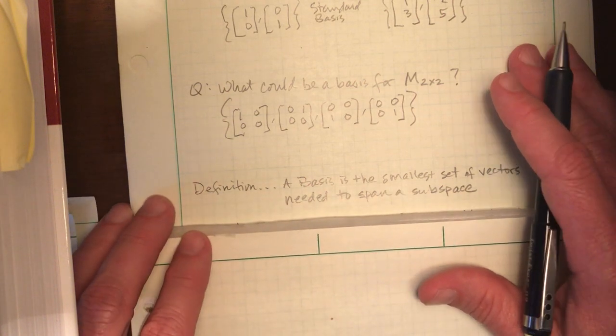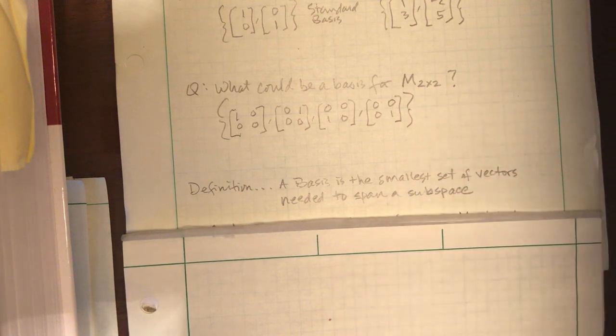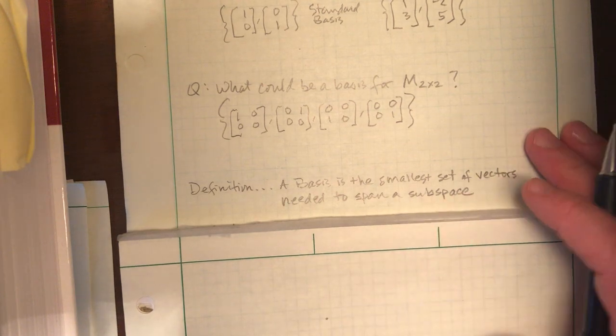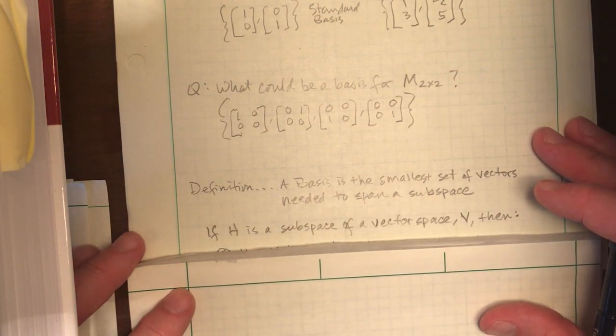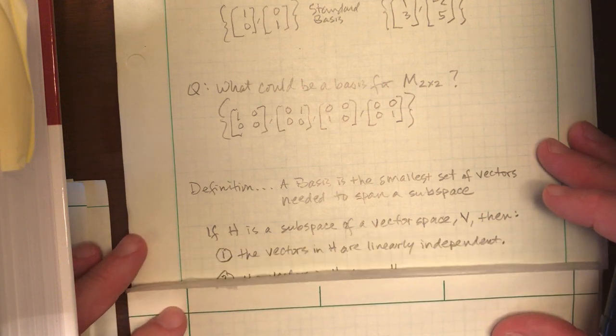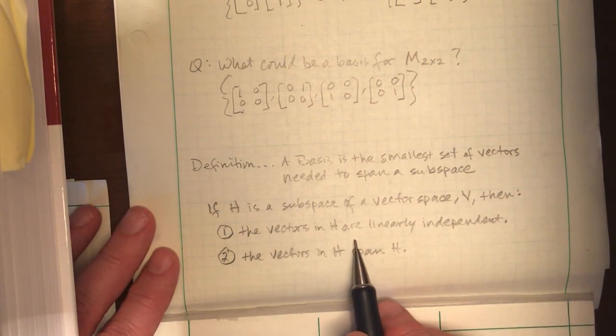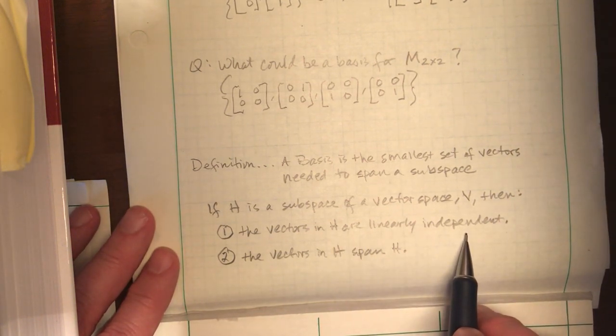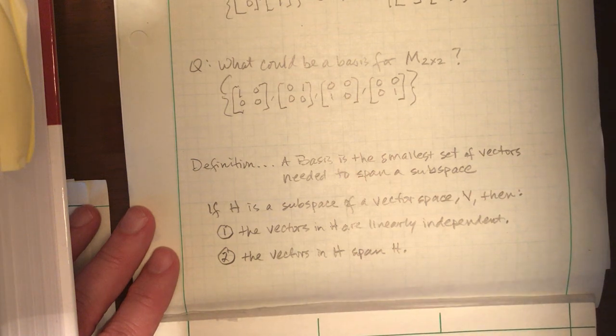So this gives us, finally, a definition. What is a basis? And all it is, it's the smallest set of vectors needed to span a subspace. So if H is a subspace of a vector space V, then there's two things we know for sure. One, the vectors in H are linearly independent. And the vectors of H have to span all of H. Let's look at two examples.